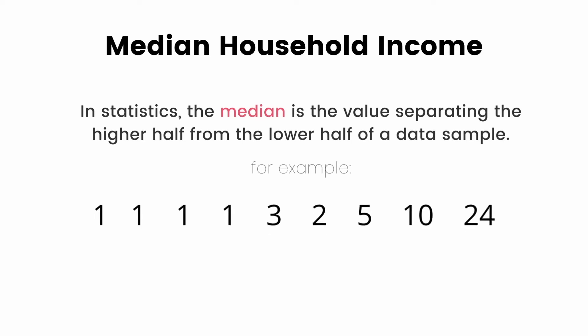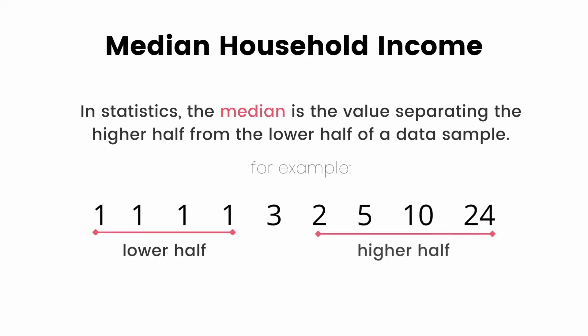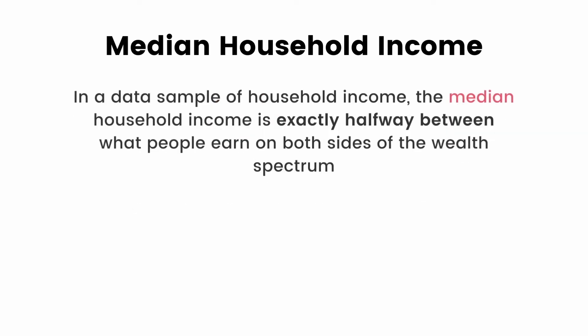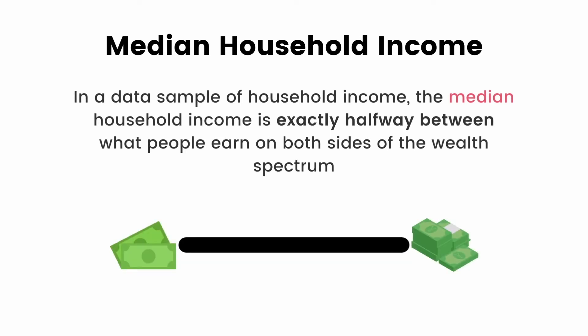For example, let's look at a simple data sample of nine different numbers. To calculate the median, we find the one in between the lower half and the higher half. In this case, three is the median. In a data sample of household income, the median household income is exactly halfway between what people earn on both sides of the wealth spectrum.